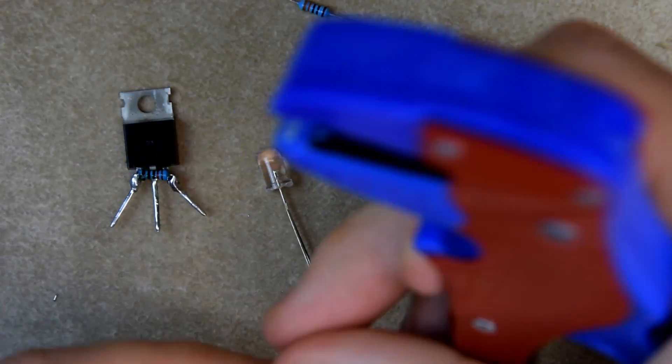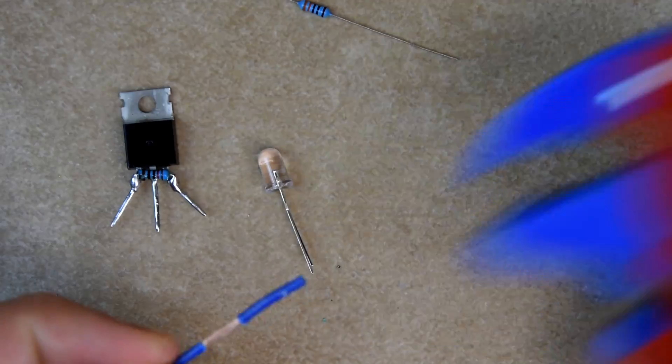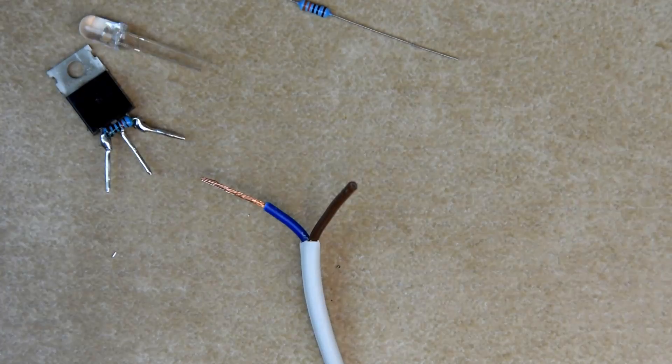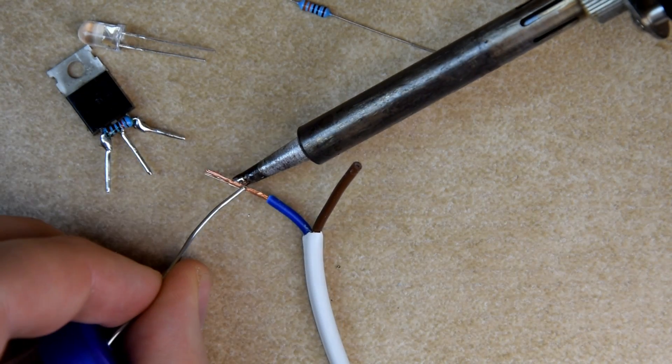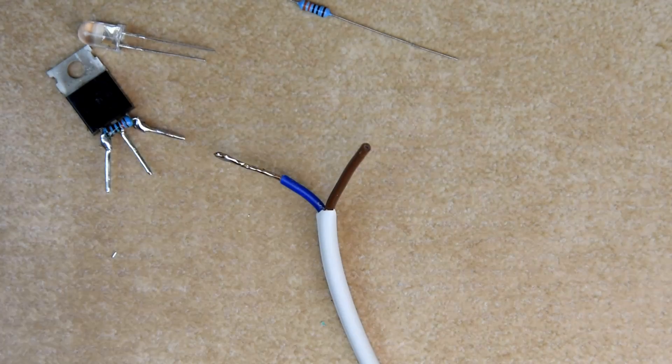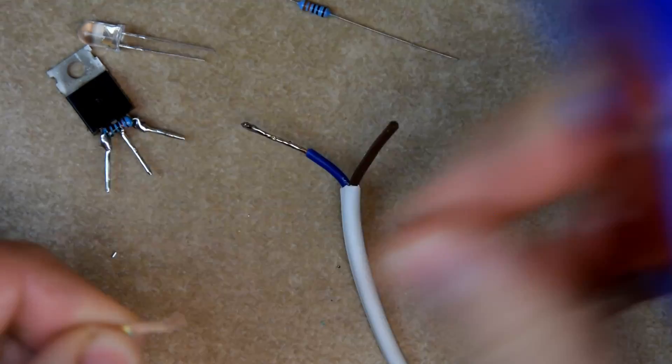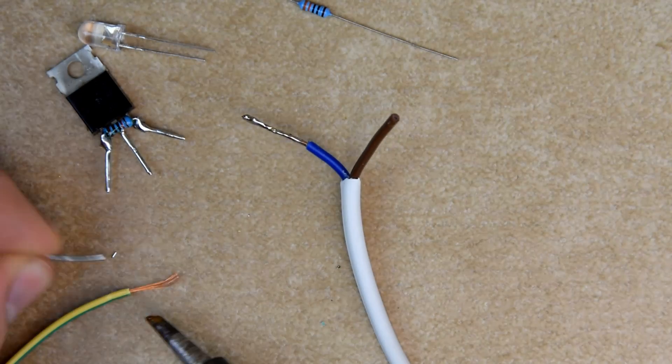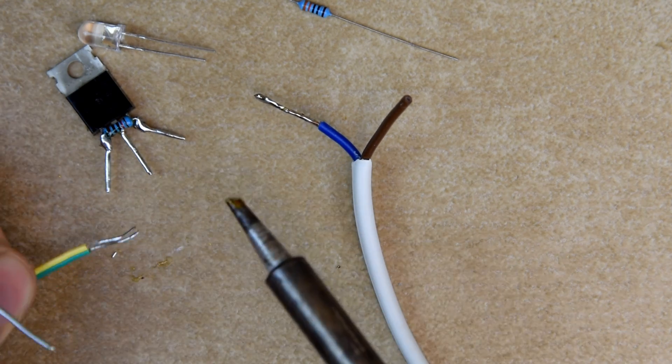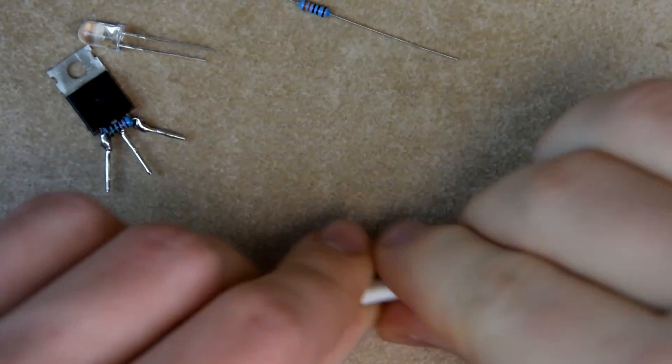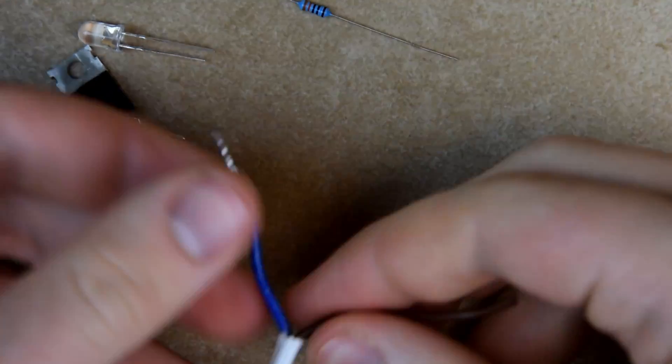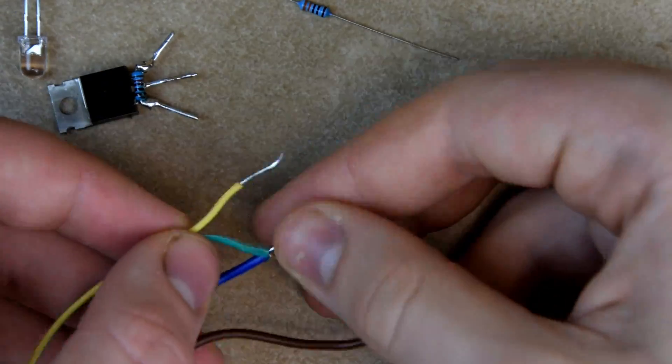First, we remove the insulation and thin one of the leads. Now we do the same to a thin cable we'll use to connect the LED. To make later connections easier, we'll remove a bit more of the outer insulation from the cable. Now we can connect the LED cable with one for the iron.